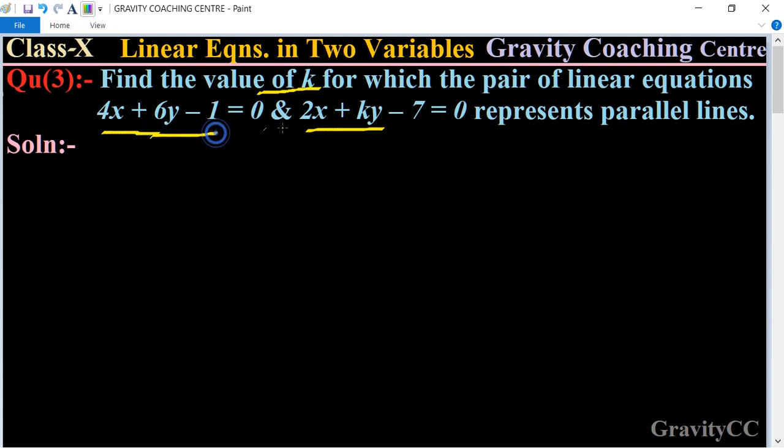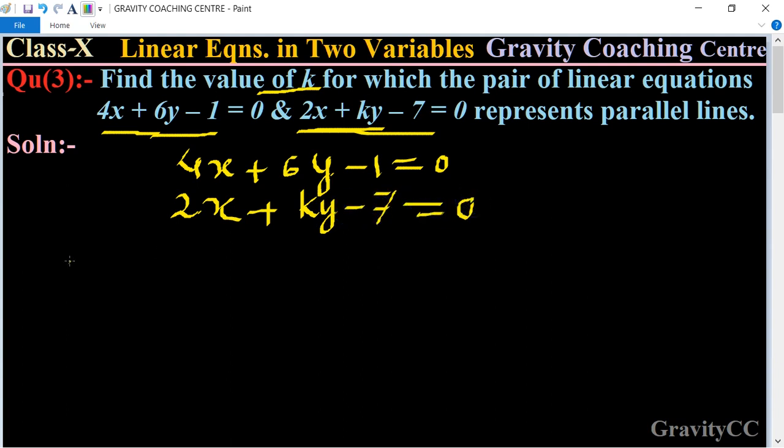In this question, two equations are given: 4x+6y-1=0 and 2x+ky-7=0.